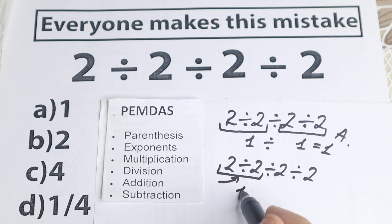2 divided by 2 equal to 1, and we still have this expression 1 divided by 2 and divided by 2. So from this expression we have this one.